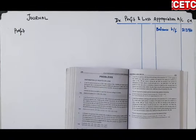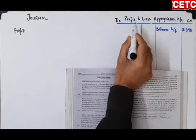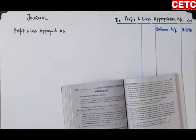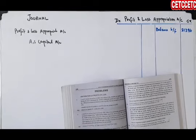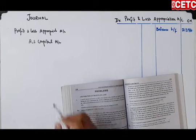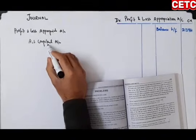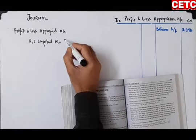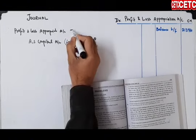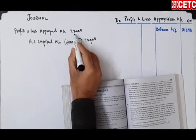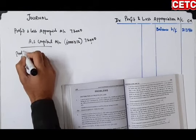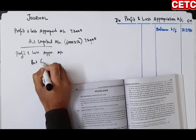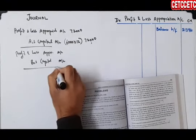Salary aur commission ki entry pass karenge. Sabse pehle likhenge: Profit and Loss Appropriation Account debit — jo bhi paisa aap allocate karenge, kisi partner ko denge ya kisi aur ko denge, to Profit and Loss Appropriation Account debit hoga. A ko deni hai salary — likhenge: A's Capital Account credit 72,000 (6,000 per month × 12 months). Aur B ko commission dena hai — Profit and Loss Appropriation Account debit, B's Capital credit 30,000.